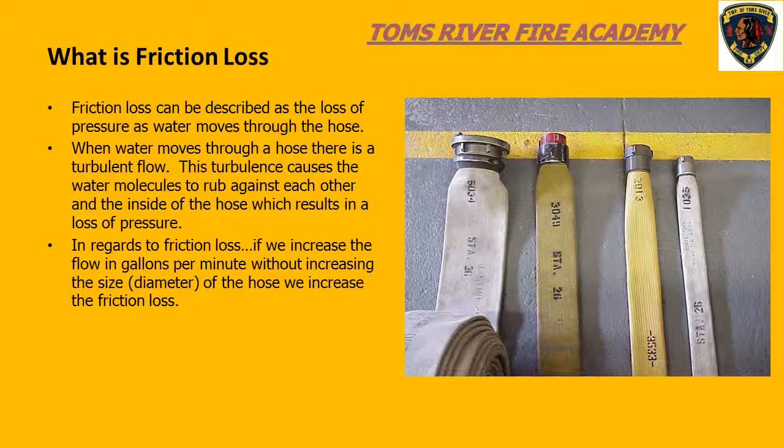we learn that each nozzle has a nozzle pressure. As an example, we know that a fog nozzle requires 100 PSI nozzle pressure to operate correctly. If we connect 100 feet of hose to our pump panel and put a fog nozzle on the other end and pump at 100 PSI, we will deliver less than the 100 PSI nozzle pressure. We need to increase the engine pressure to compensate for the loss of pressure as water moves through the hose. This is what we refer to as friction loss.